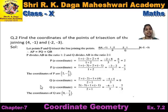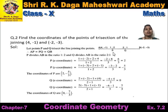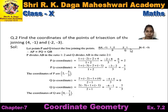Question 2: Find the coordinates of the points of trisection of the line joining (4, -1) and (-2, -3). Two points are given and we need to divide the segment into 3 equal parts — trisection — and find the coordinates of the two internal points. Point A is (4, -1) and point B is (-2, -3). We divide this line segment into 3 equal parts using two points P and Q, giving three equal parts.